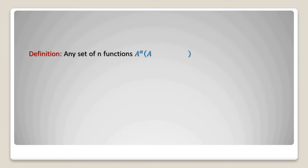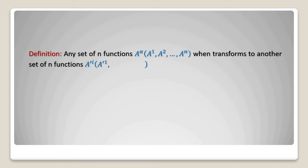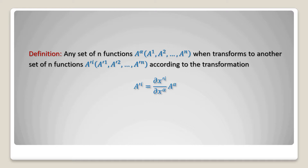Definition. Any set of n functions a upper suffix alpha, where alpha goes from 1 to n, when it transforms to another set of n functions a prime i, where i goes from 1 to n, according to the transformation a prime i equals del x prime i divided by del x alpha into a alpha, is called a contravariant tensor of rank 1.